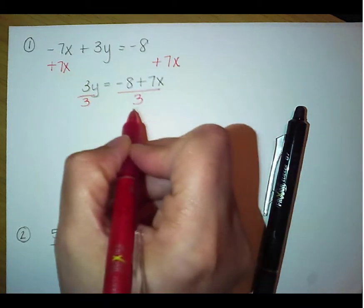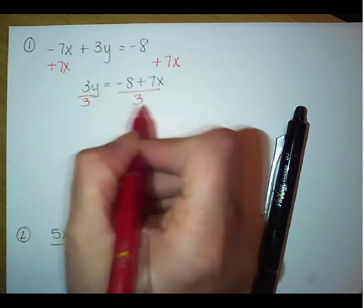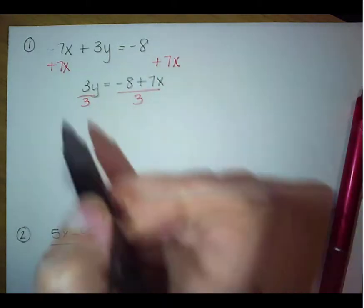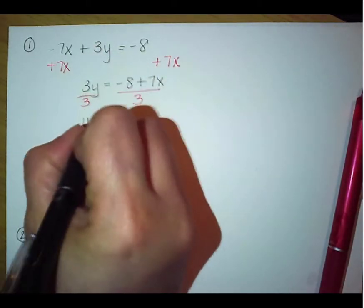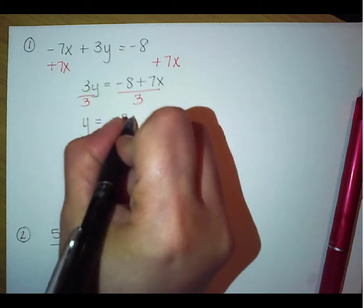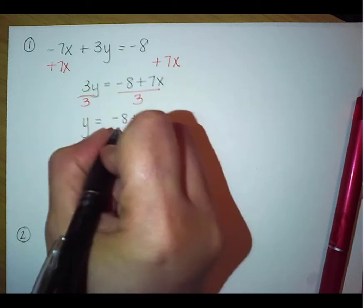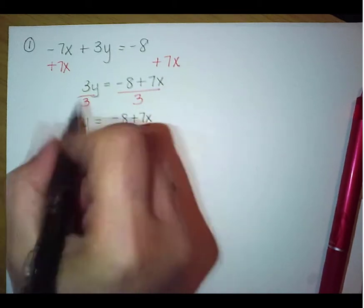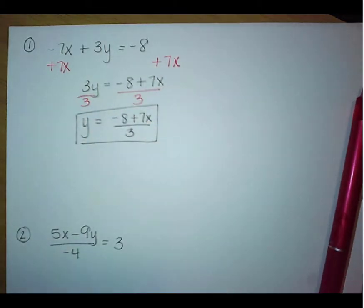I can't divide 8 into both 3 and 7. There's nothing that reduces out of all 3 of those. So we're just going to end up with y equals negative 8 plus 7x all divided by 3. So there's the answer for our first your turn.